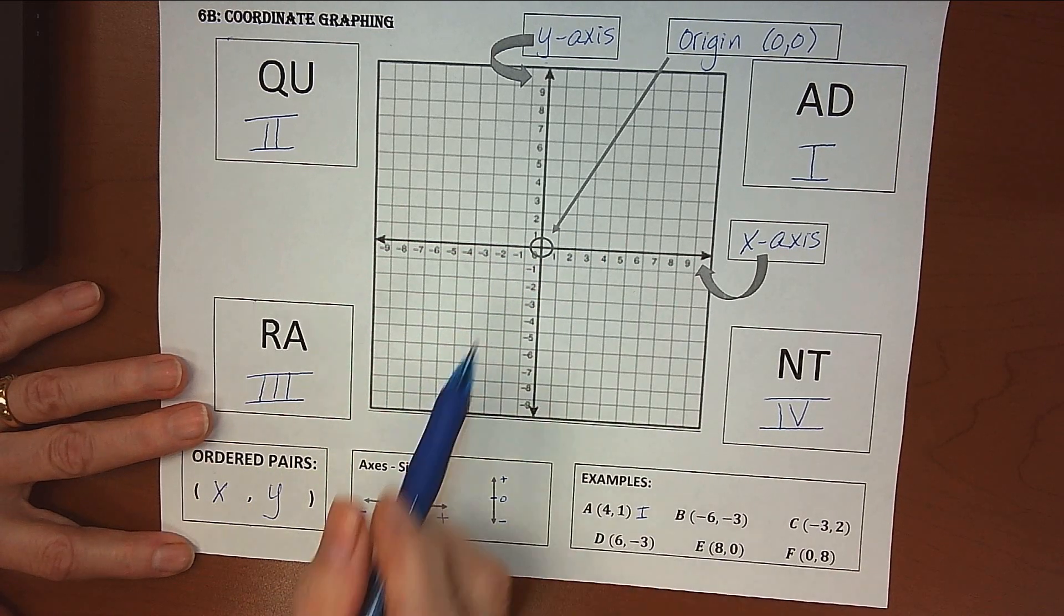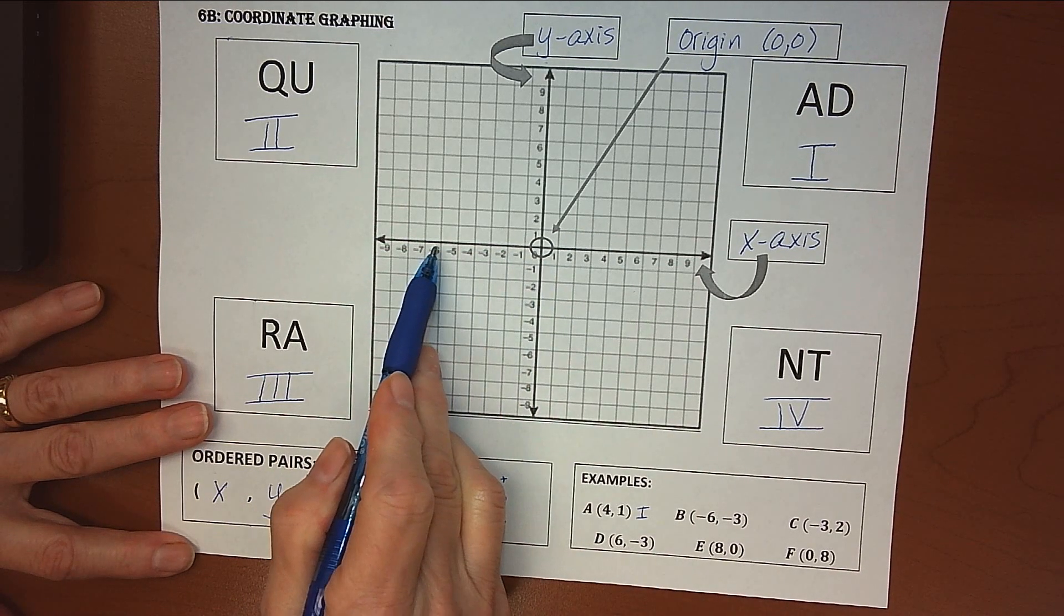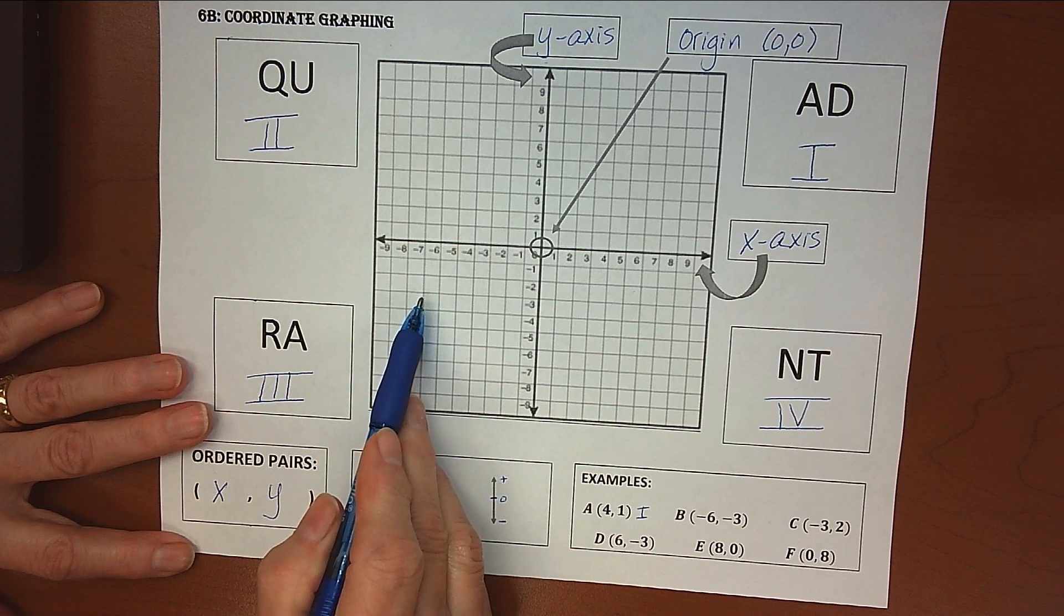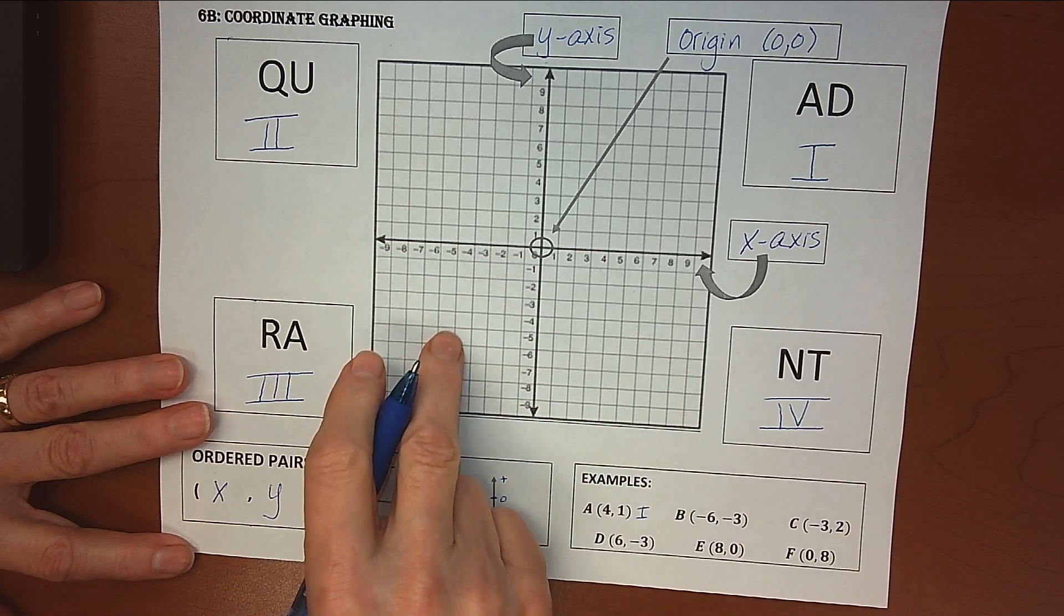For our second one, it tells us to go back 6, and then down 3, and so that one would fall into quadrant III.